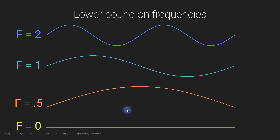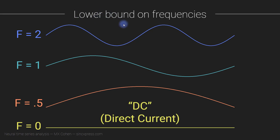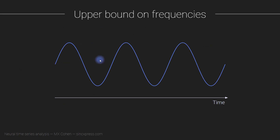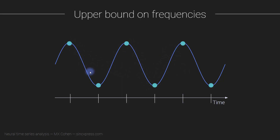That is the lower bound for frequencies. Now let's talk about the upper bound — the highest frequency we can measure in a signal. Imagine some analog signal out in the real world that we want to discretize, making sure we can still recognize it as an oscillatory, rhythmic signal. The question is: what is the theoretical minimum number of points we need to sample from this signal in order to detect its particular frequency?